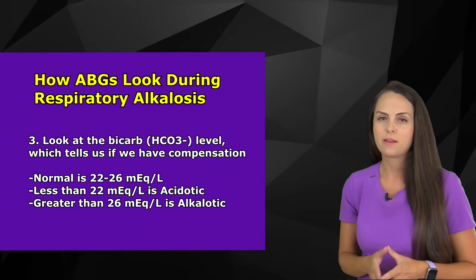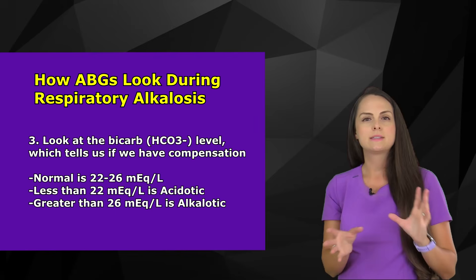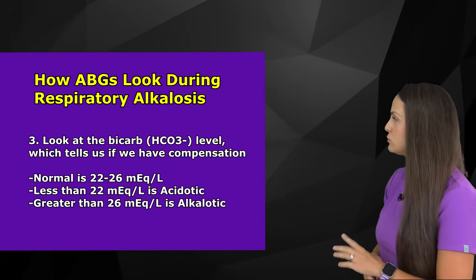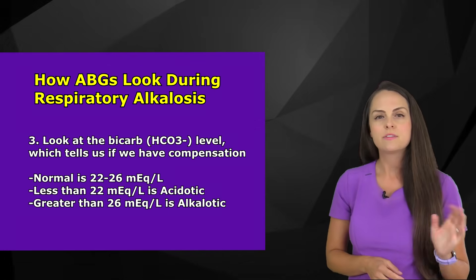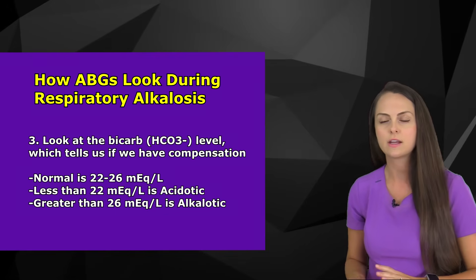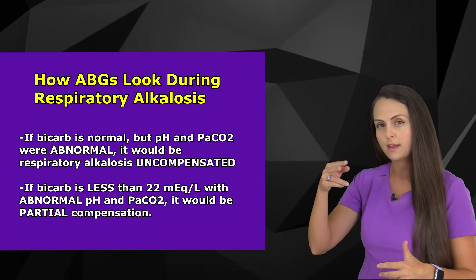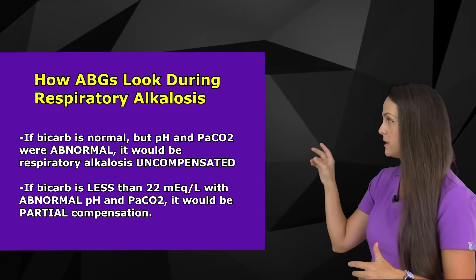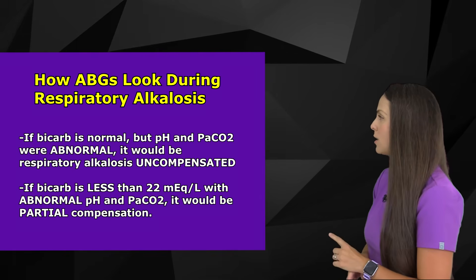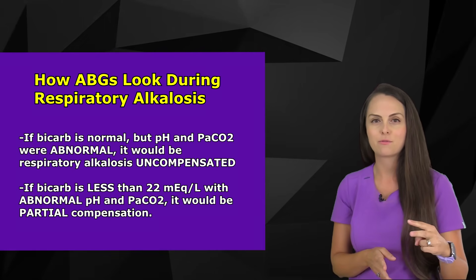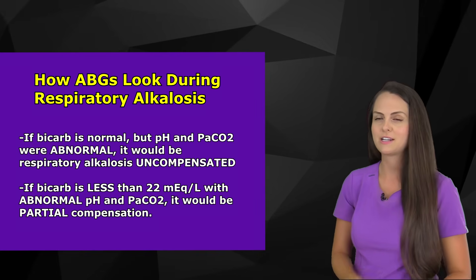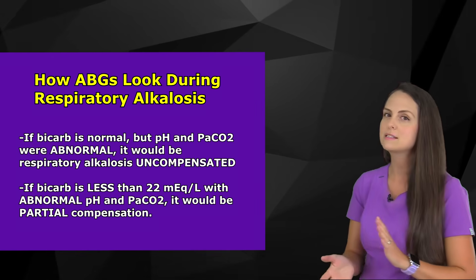Then look at the bicarb level, the HCO3, which tells us if there's compensation going on — this value can be normal or abnormal. A normal bicarb level is about 22 to 26 mEq/L. Less than 22 is on the acidotic side; greater than 26 is on the alkalotic side. If bicarb is normal while pH and PaCO2 show respiratory alkalosis values, we have uncompensated respiratory alkalosis. But if bicarb is less than 22 along with those abnormal values, we have partial compensation — the bicarb is trying to make things more acidic to bring that blood pH down.